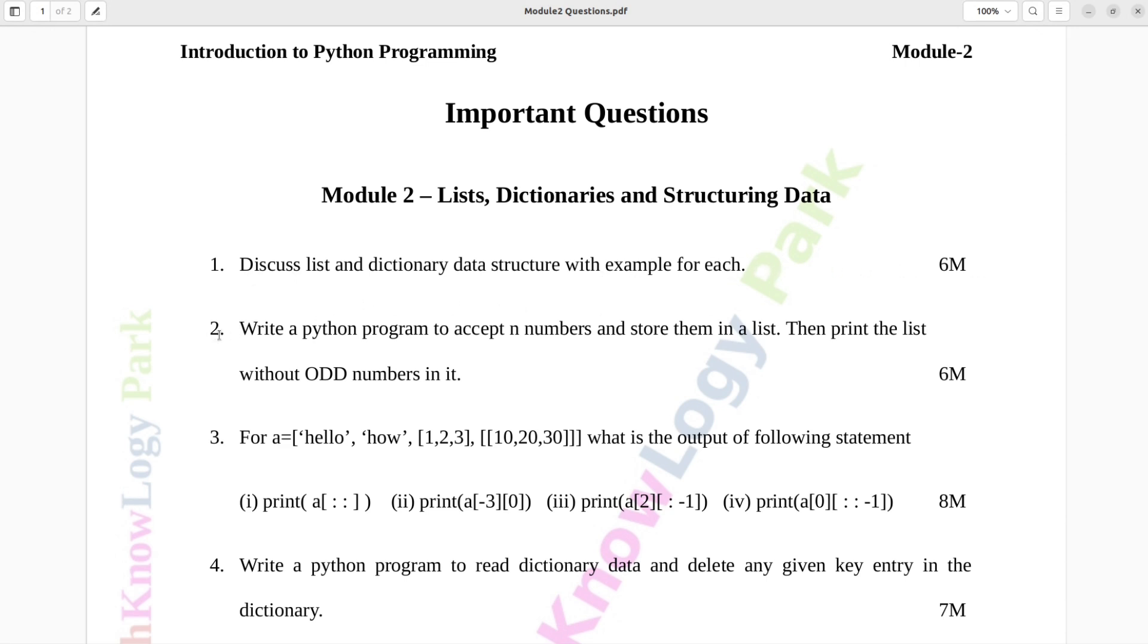Question number two. Write a Python program to accept n numbers and store them in a list. Then print the list without odd numbers in it. Six marks.